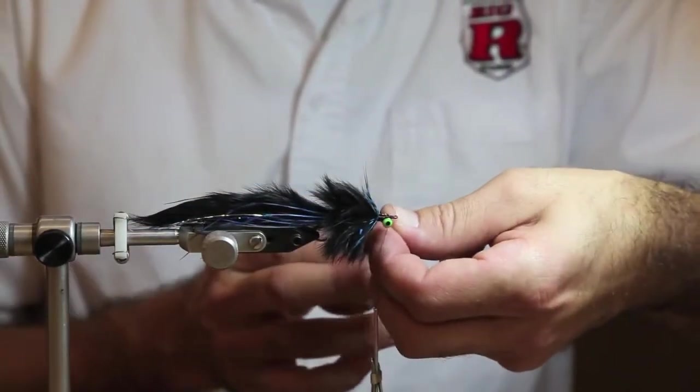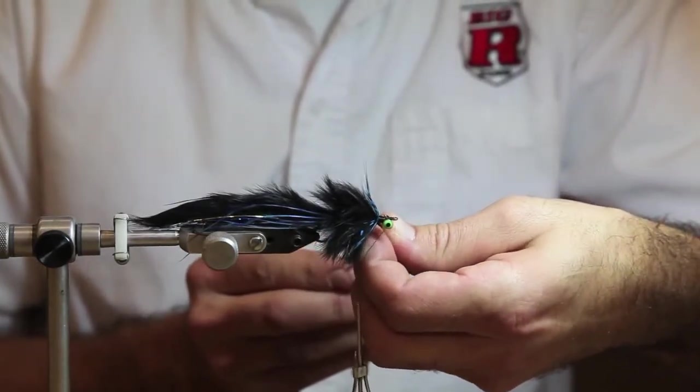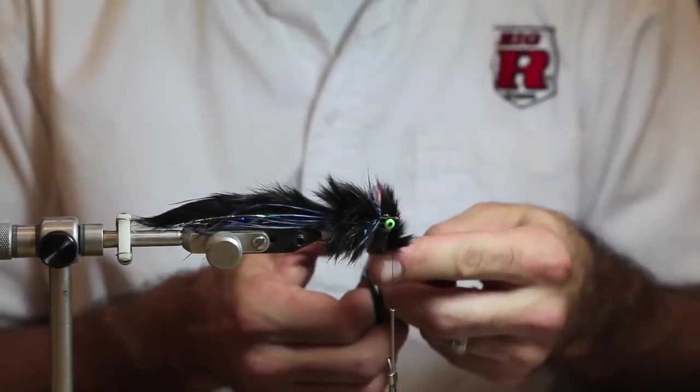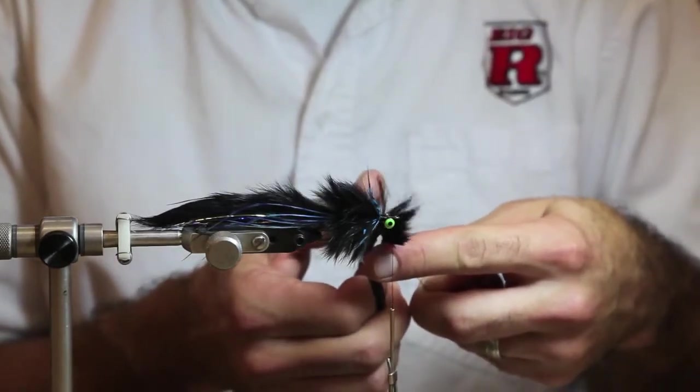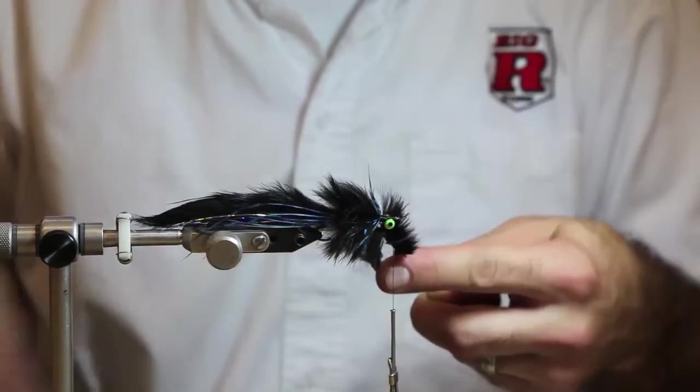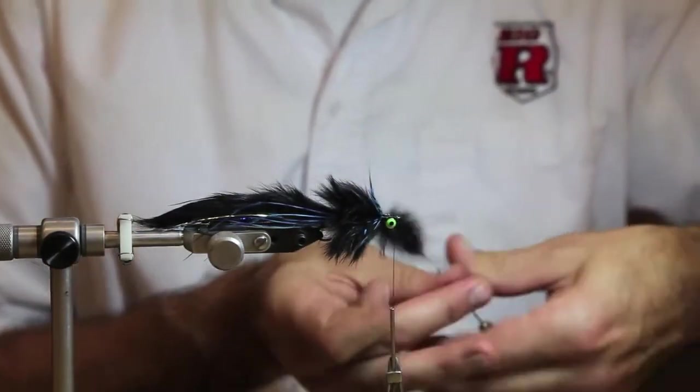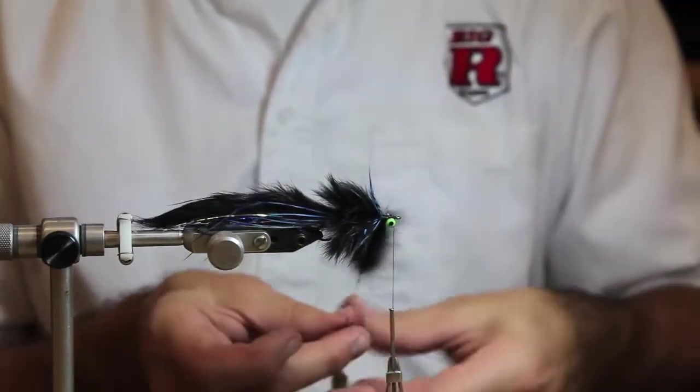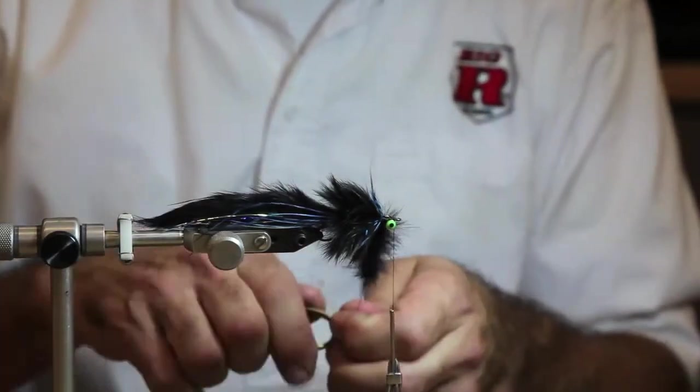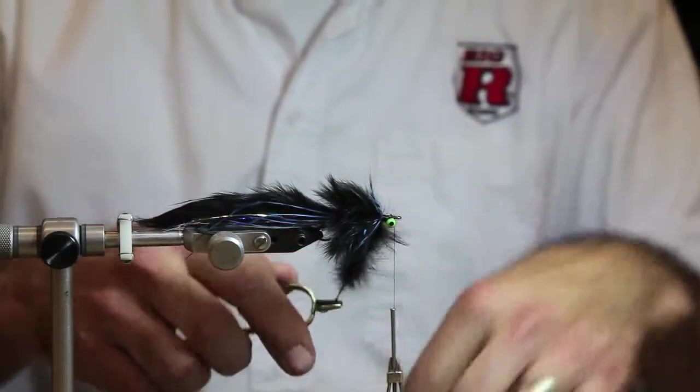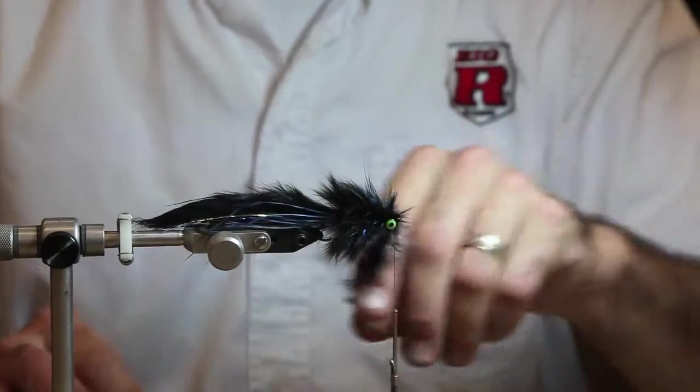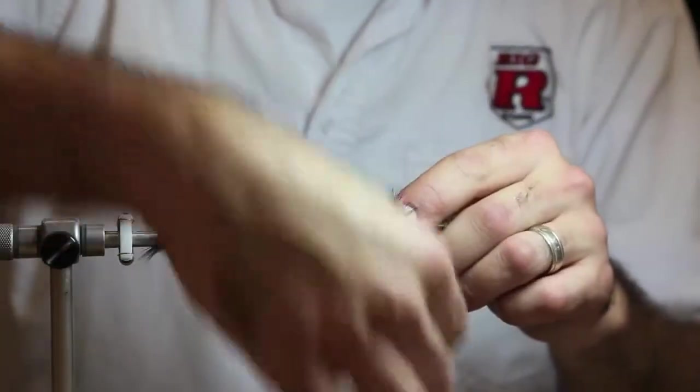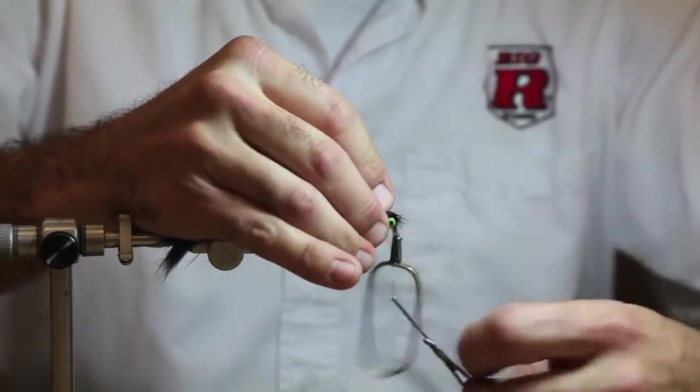This is the trickiest part of this fly, is getting this hide away from this rabbit strip. Once you get it locked in your dubbing loop, you need a really sharp pair of scissors. You just cut up along the hide. Then once it's just the rabbit on there, you just spin it. Create this nice dubbing brush, which you can buy now. Take some pliers, wrap it around, completely encapsulate the eyes, turn it around the front. Tie it off.